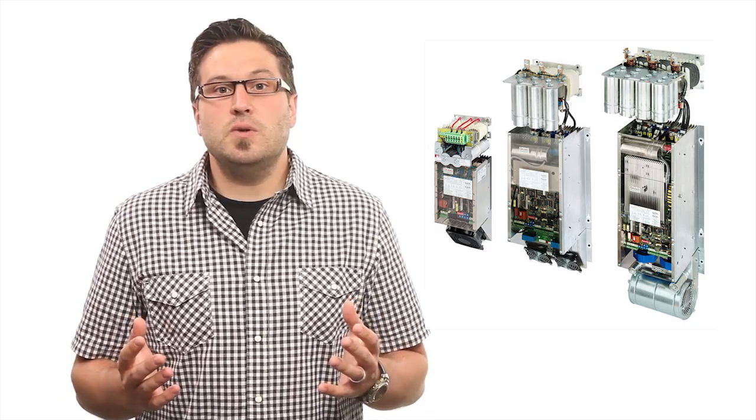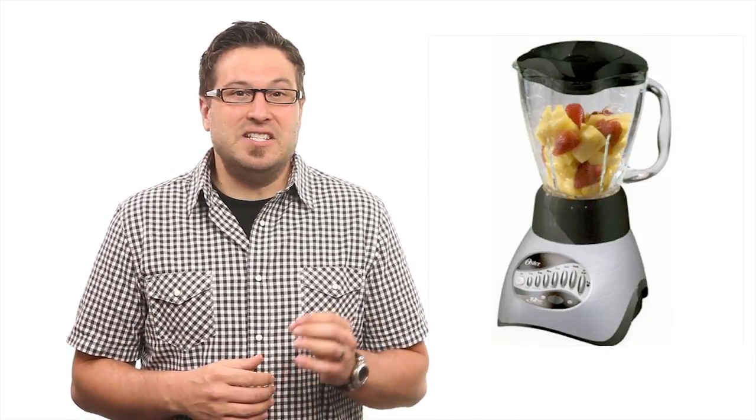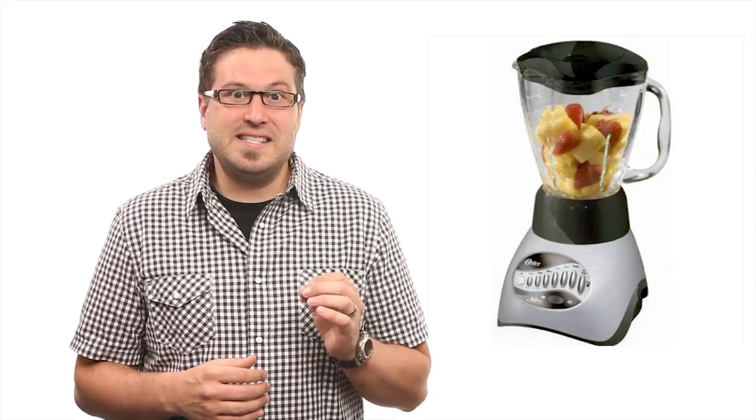Sometimes you want an electric motor to run at different speeds depending on the application you're using it for. Engineers use units called variable speed drives to control the speed of an electric motor by controlling the voltage or frequency of the electricity used to run the motor. The use of drives allows for smoother operation, acceleration control, accurate positioning, and torque control in electric motors. It's variable speed drives that allow us to have 12-speed blenders instead of just one-speed blenders. That means we can get our smoothies in 12 deliciously distinct consistencies.